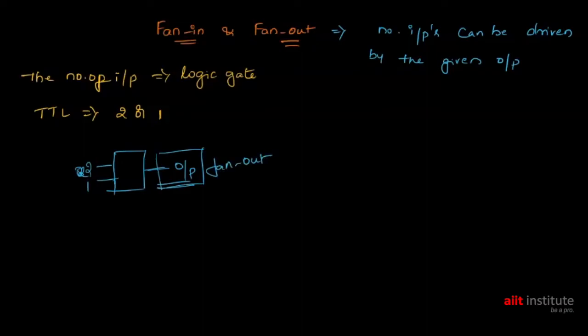This fan-out depends on the current this particular output has and the current that is needed to all the inputs. Suppose the device or logic gate is giving 50 milliamps of current and that 50 milliamps is required by multiple devices. So we will consider how much each device wants. Suppose this needs 10 mA